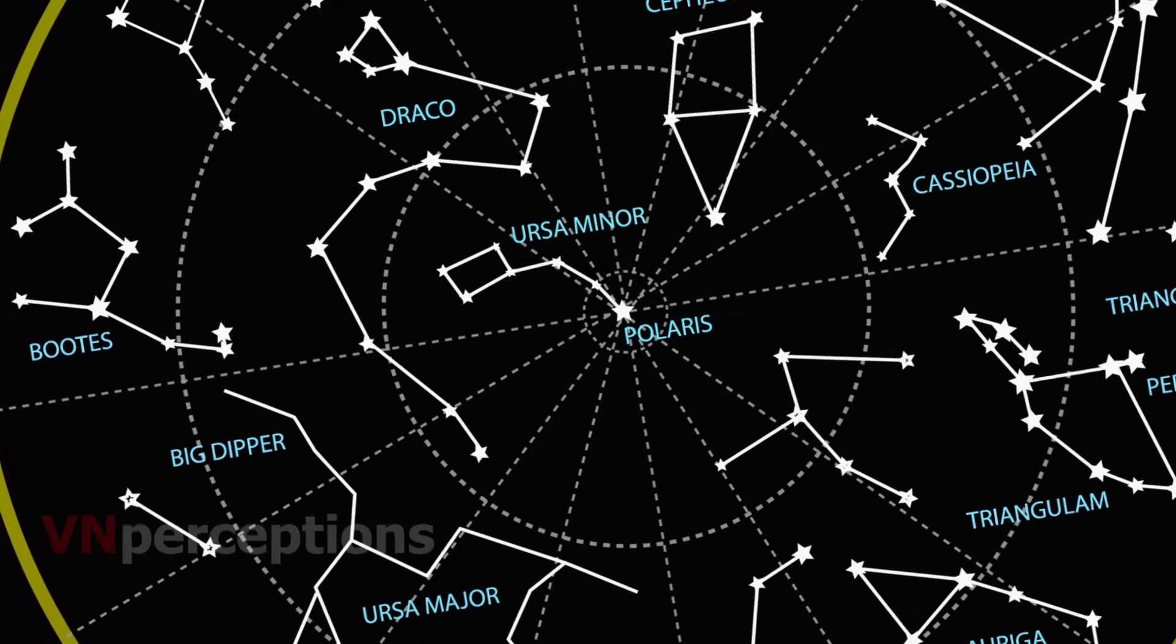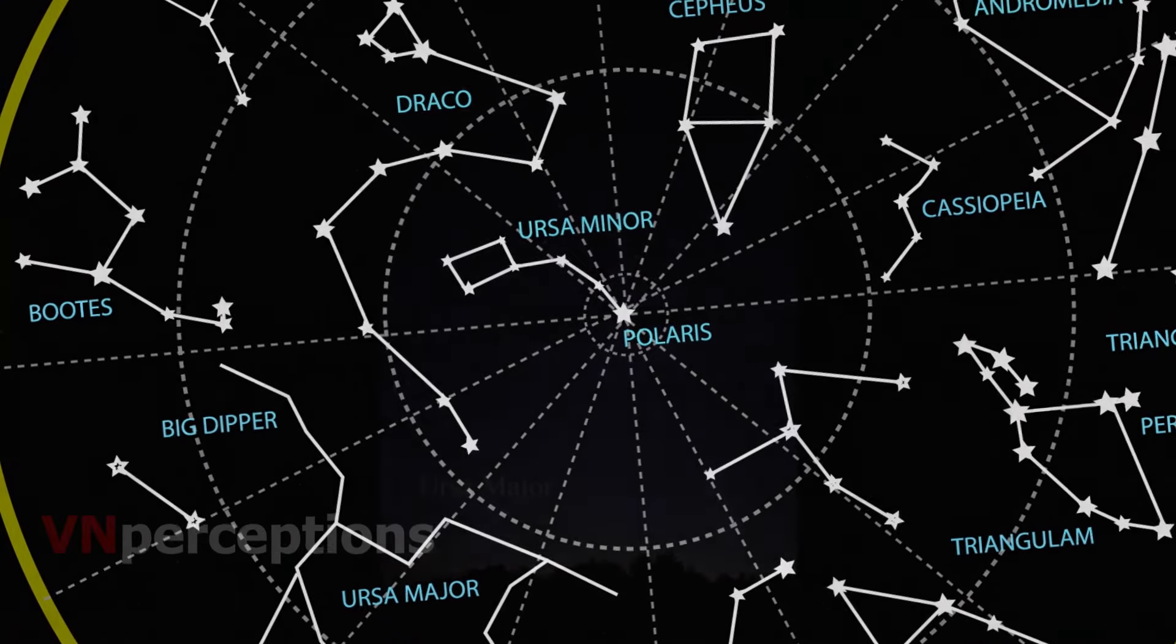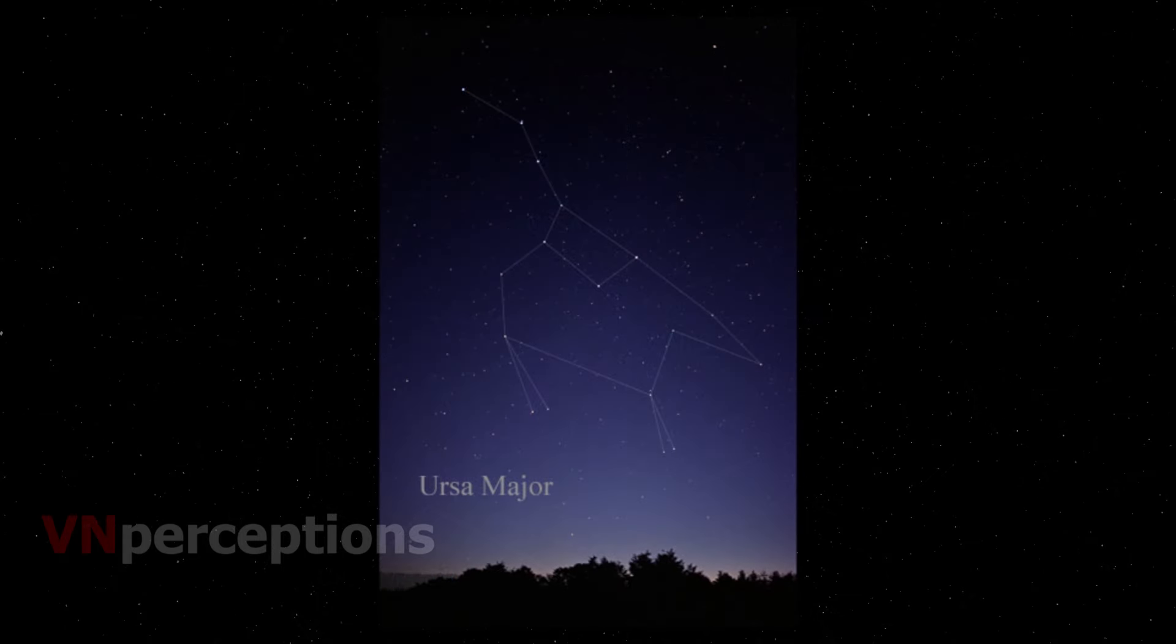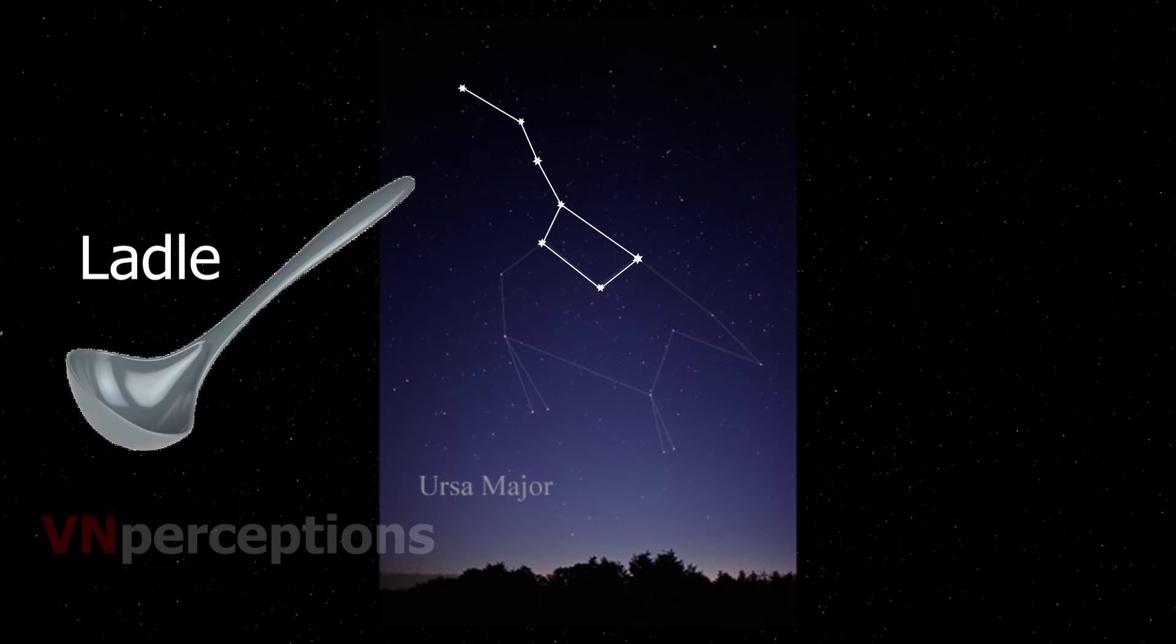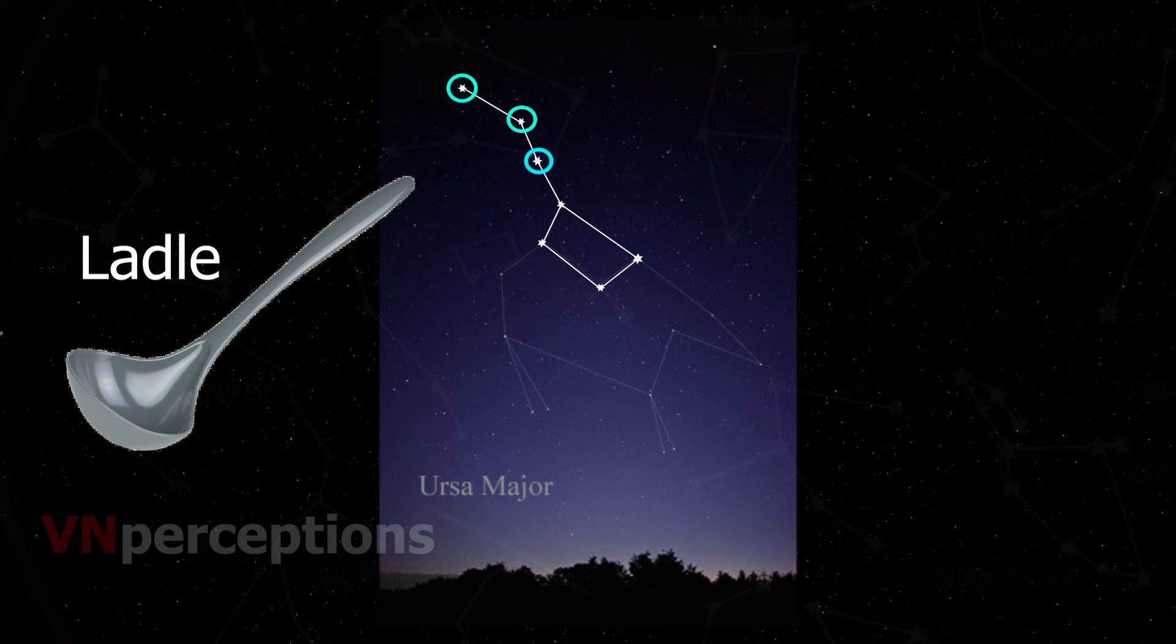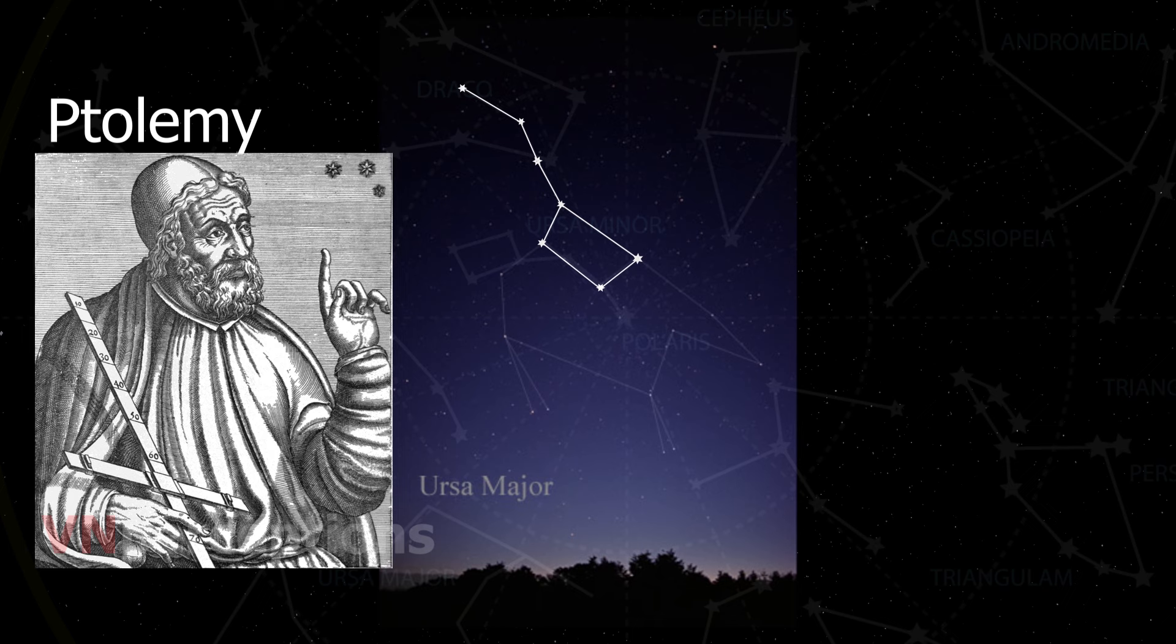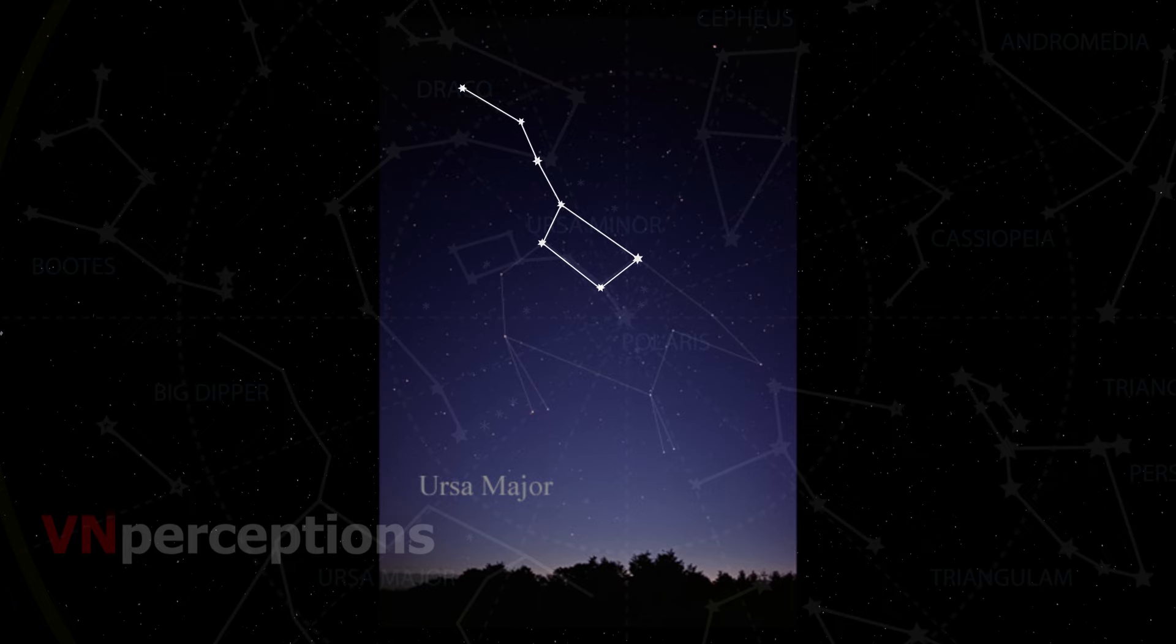Among the constellations, we have Ursa Major. It is also known as the Big Dipper, the Great Bear or the Saptarishi. There are seven prominent stars in this constellation. It appears like a big ladle or a cushion mark. There are three stars in the handle of the ladle and four in its bowl. It was one of the original 48 constellations listed by Ptolemy in the 2nd century AD. Today, it is the third largest of the 88 modern constellations.